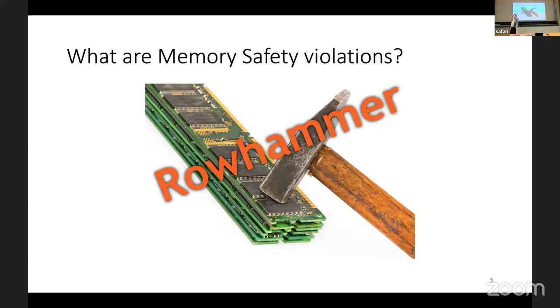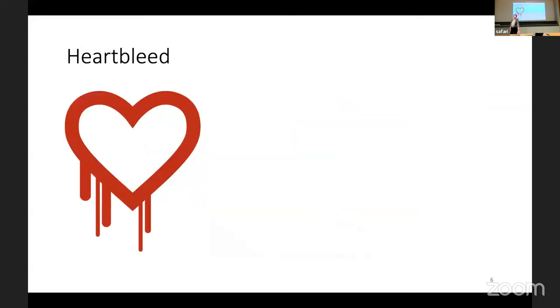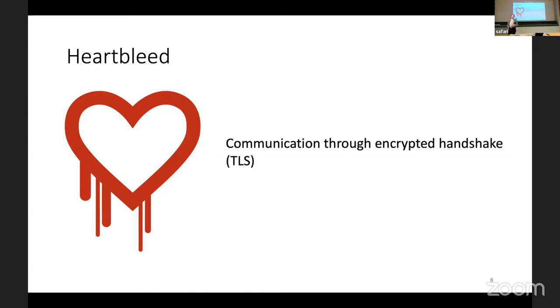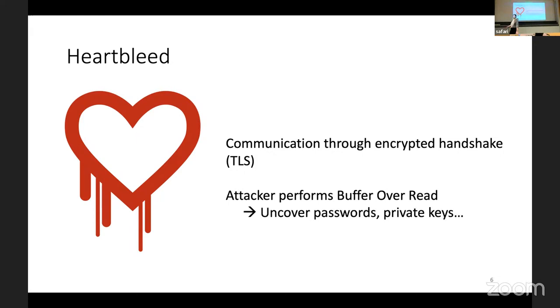You might have heard of some attacks that use memory safety violations. For example, Rowhammer is an important attack, but we will talk mostly about things like Heartbleed. This is an attack that happens when there's communication through an encrypted handshake like TLS, and the attacker performs a buffer overread — basically reading more than the victim would want — and this leads to passwords or private keys being uncovered. So let's go into more detail on what memory safety violations are.